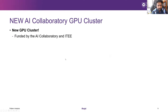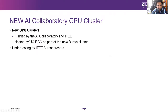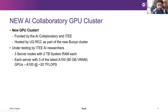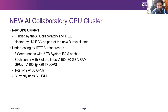The new Bunya cluster is funded by the AI Collaboratory, also hosting this Summer of AI. The UQRCC is looking after it. Currently testing at ITEE — three server nodes with two terabytes of system memory each. Each server has three of the latest A100s running around 20 teraflops, double the speed of V100s. So we have a total of nine A100s, and with some split into smaller virtual GPUs we'll probably have around 16 to 18 GPUs total. Also uses Slurm. One node will eventually run FastX, which I'm going to show you now.